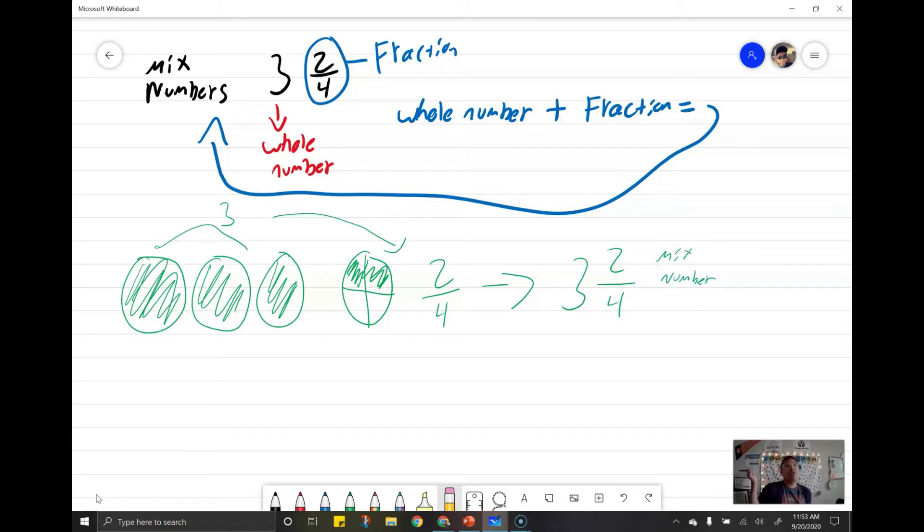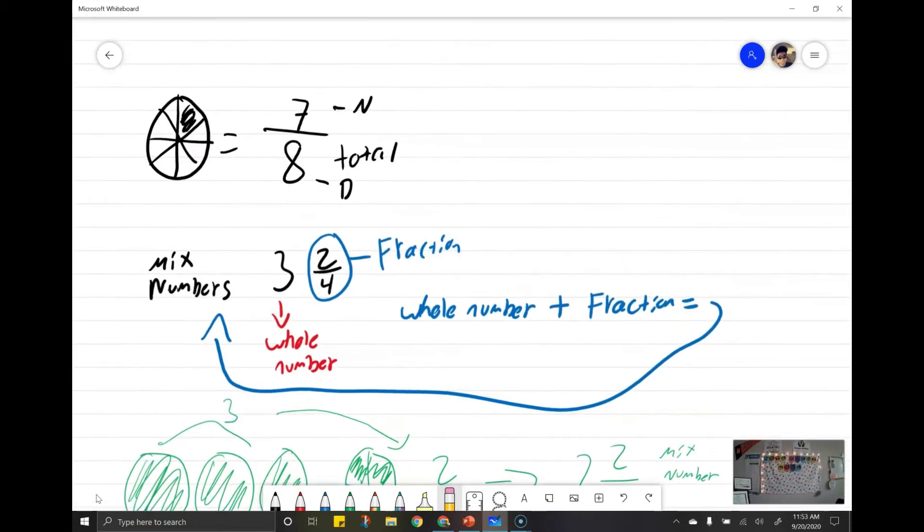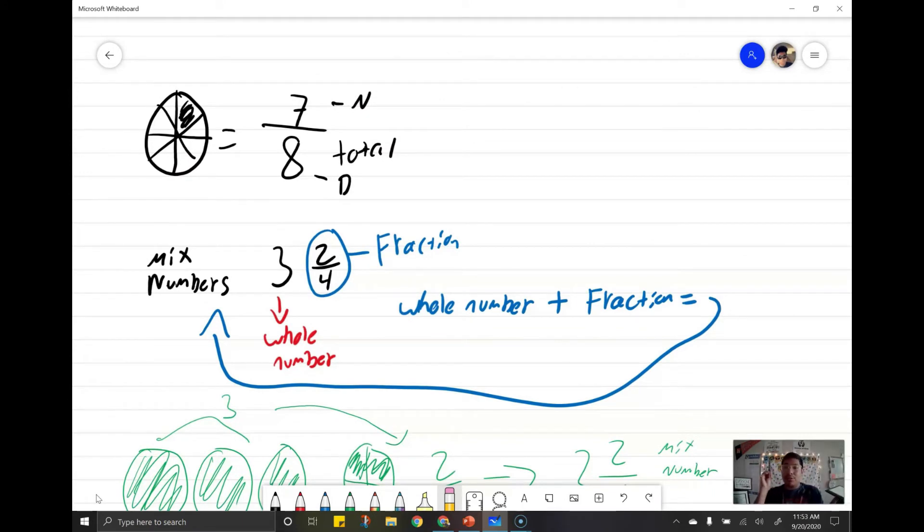So we learned about fractions, a proper fraction, which is 7 eighths, when my numerator is smaller than my denominator. And then we learned about mixed numbers, which is when I have a full number and a fraction. Now what's the other fraction that I talked about? Who remembers what I talked about last time? Improper fractions.